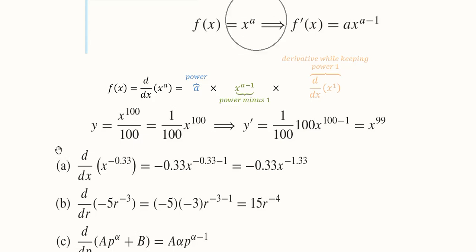For further examples, consider a function with coefficient 1/100 and x raised to the power 100. The power rule is applicable here: 1/100 comes outside as a coefficient, the power 100 comes to the front, one is deducted from the power, and the derivative of x with respect to x reduces to one. The 100s cancel out and the answer is simplified.